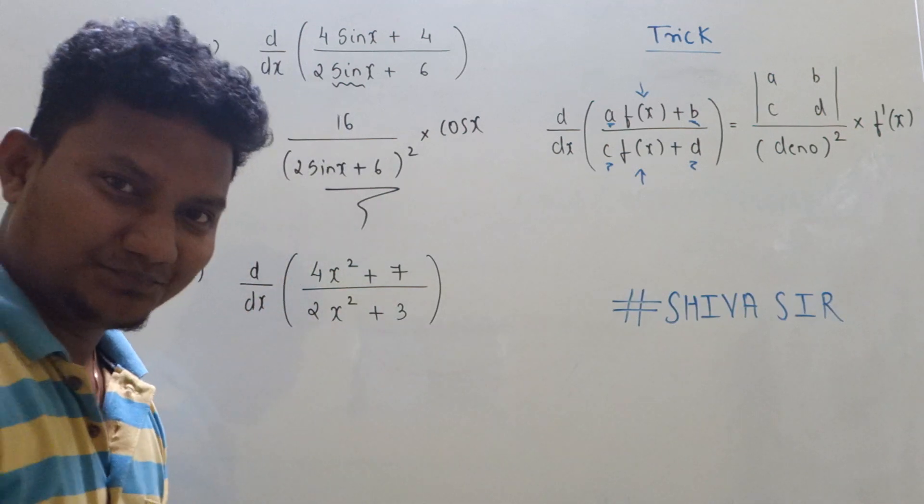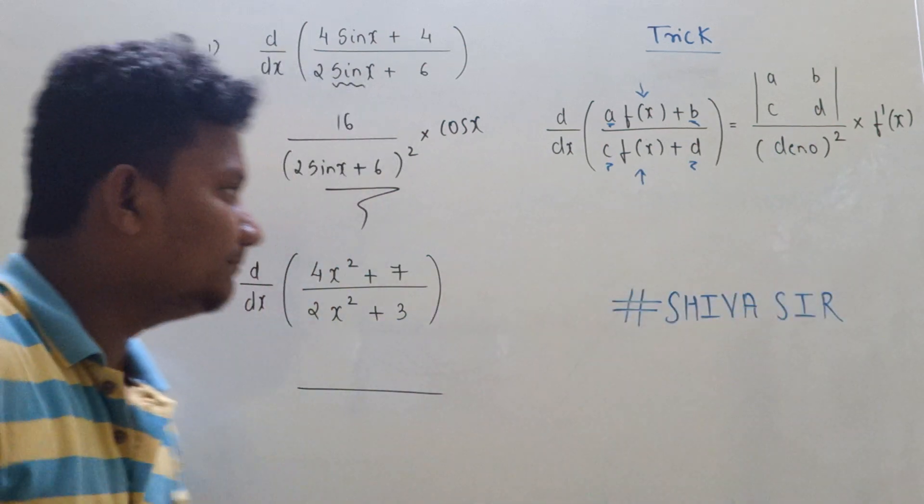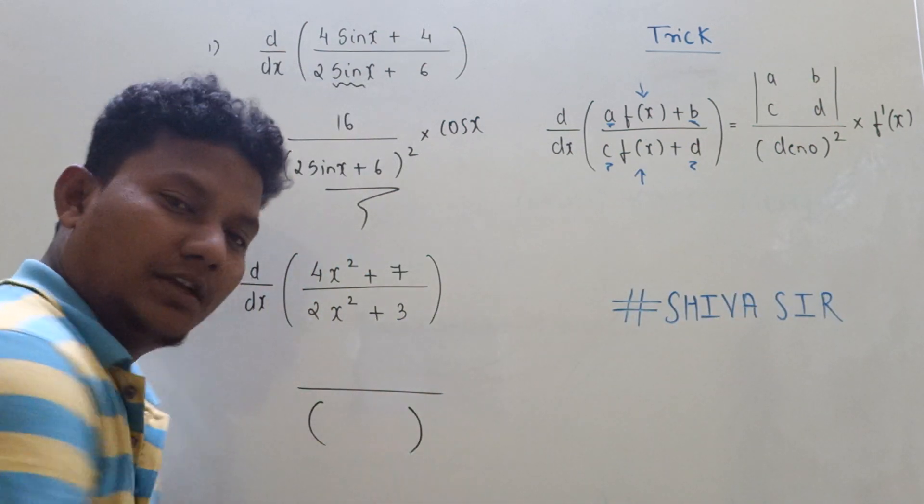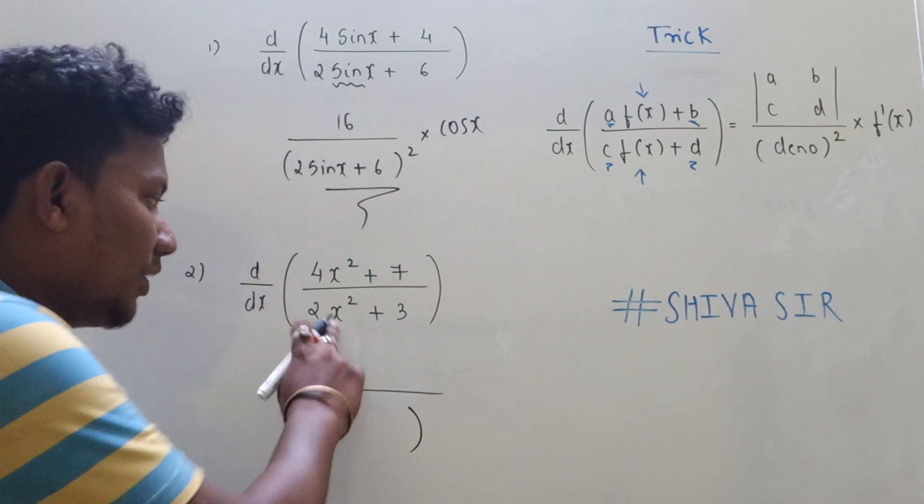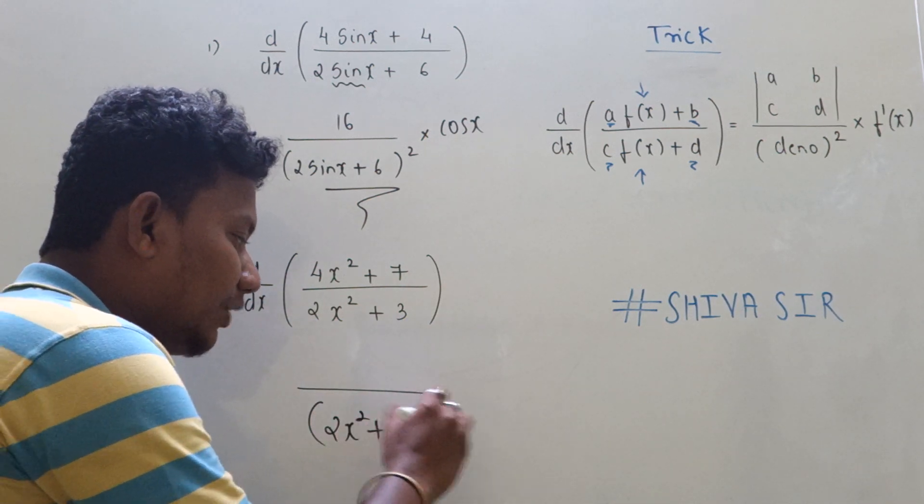Let's focus on the second example. Let's see what will be the answer for the second one. Again, apply the same fundamental: square of the denominator. So what is there in the denominator? It is (2x² + 3)².